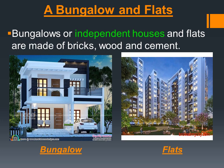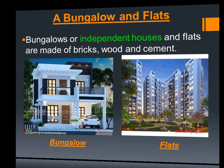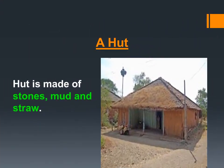The next type of house is a hut. A hut is made of stones, mud, and straw. We normally see these kinds of houses in villages.